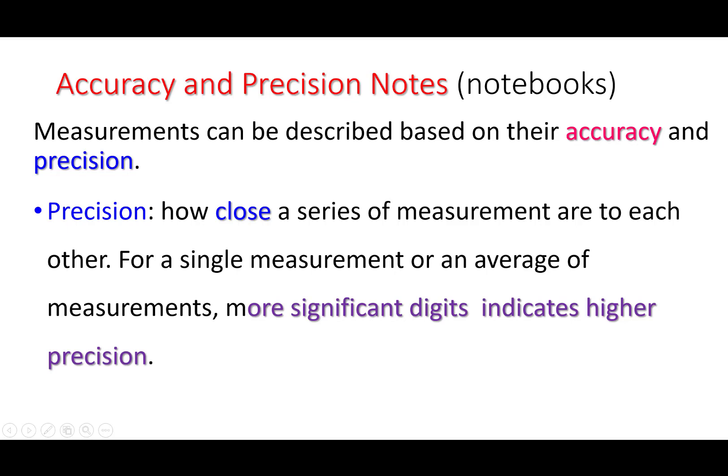Precision is how close a series of measurements are to each other, and that's for a series of measurements. For a single measurement or the average of measurements, more significant digits indicates higher precision. So for multiple measurements, it's how repeatable something is and how close the measurements are upon repeat. More sig figs is more precision for a single measurement.